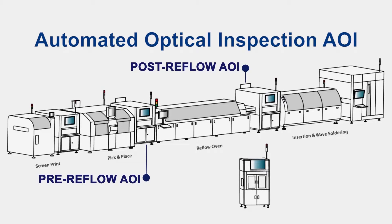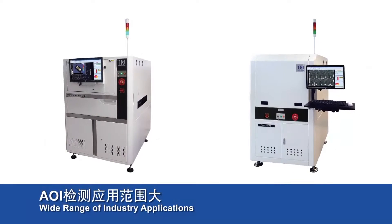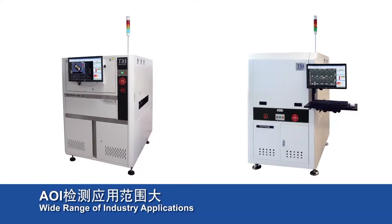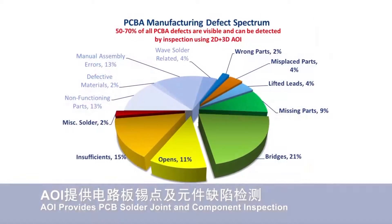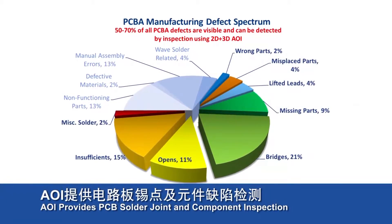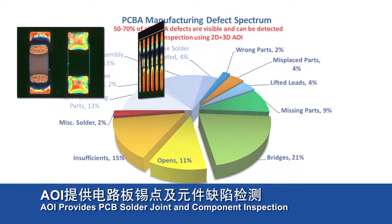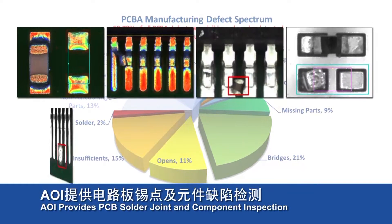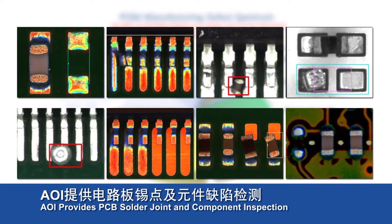Automated Optical Inspection — AOI stands for Automated Optical Inspection and is responsible for inspecting components, solder joints, open short circuits, and other forms of defects on PCB assemblies.